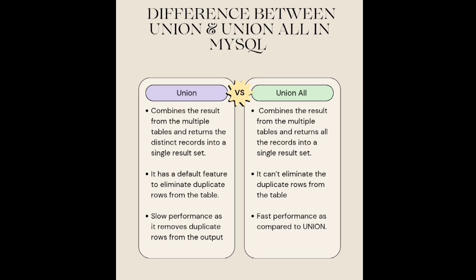Union has a default feature to eliminate duplicate rows from the table. Union All cannot eliminate the duplicate rows from the table.